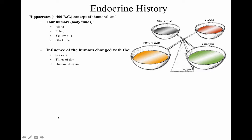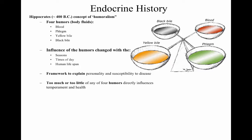The humors were thought to change with the seasons, the time of day, and over a human's lifespan. This was a framework to explain personality and susceptibility to disease. Too much or too little of any of the four humors directly influenced temperament and health, and imbalances were treated with bleeding, vomiting, and purging — get rid of the fluid, get rid of the problem.